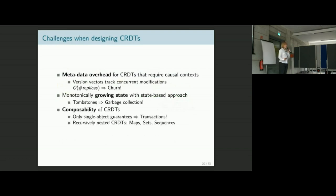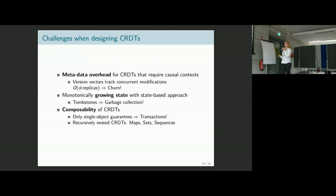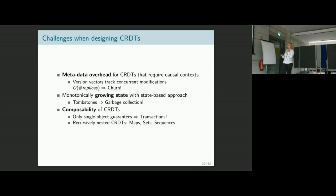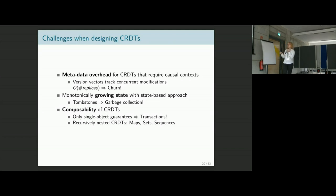CRDTs have been published in academic literature and a lot of people build their own. If you're ever tempted to do that, keep in mind there are a few things that might bite you. One thing is operation-based CRDTs that require causal context like sets — there will be some metadata involved. Typically people use version vectors to track concurrent modifications, and if you have churn in your system with thousands of nodes coming and going, this metadata will be very large. Similarly, if you use the state-based approach, the state will grow with every update. Especially if you start deleting things, you add tombstones that mark deletions and need to stay until all replicas have seen the updates, so you need some form of garbage collection.